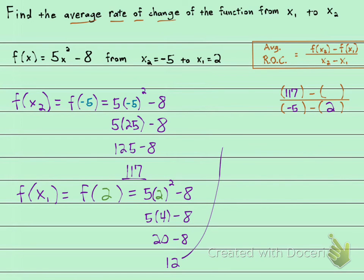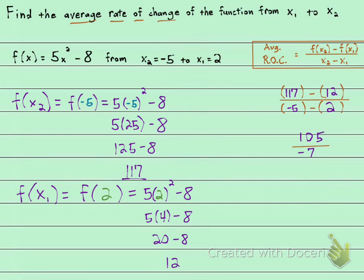20 minus 8 is 12. That's the last piece we need. So we have 117 minus 12, which is 105, over negative 5 minus 2, which is negative 7. 105 divided by negative 7 — and it divides evenly — gives us negative 15. So the average rate of change between these two points is negative 15.